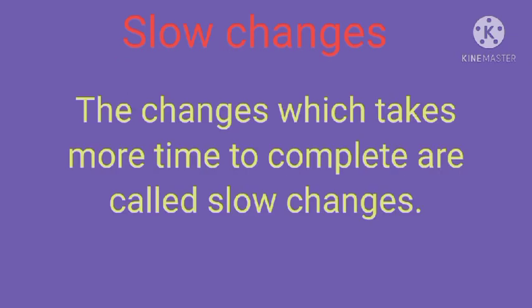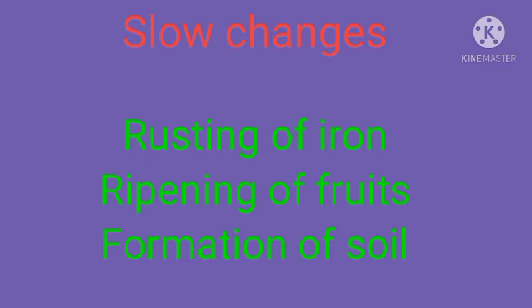Next is the slow change — just the opposite of fast changes. Changes which take more time to complete are called slow changes. Examples include rusting of iron, formation of soil, and ripening of fruits, all of which take more time to complete.